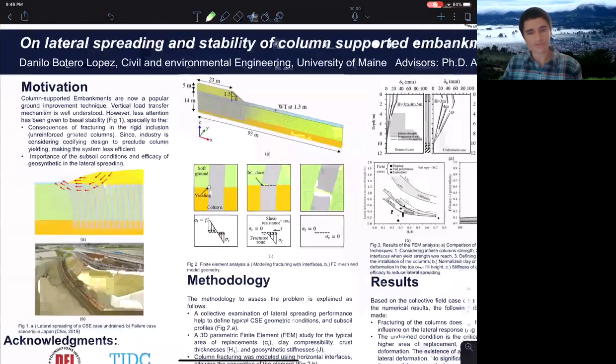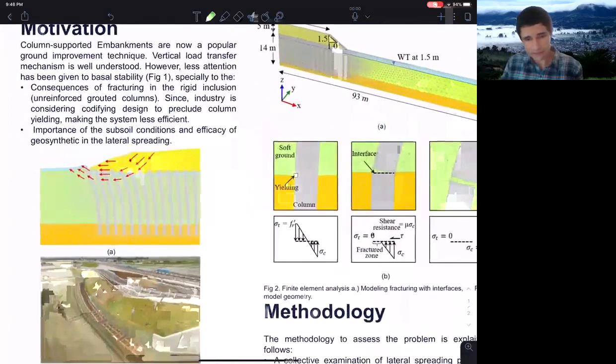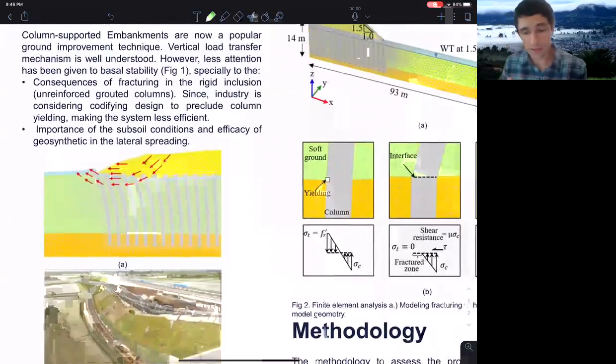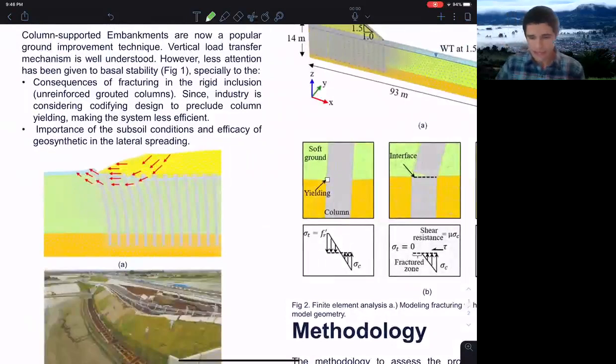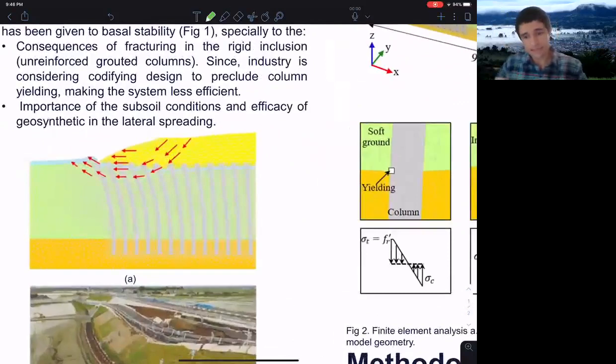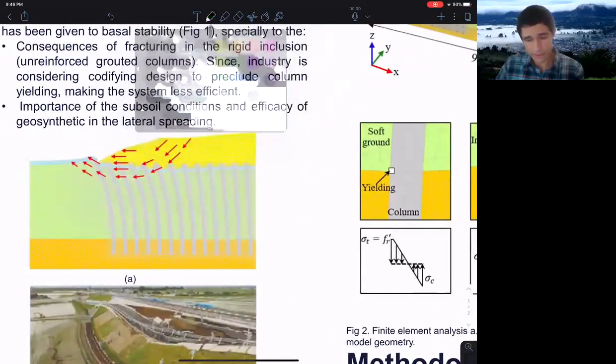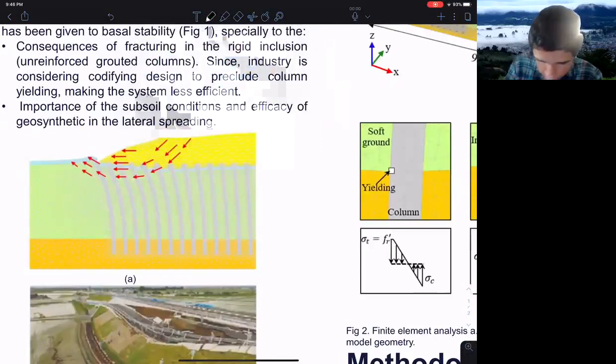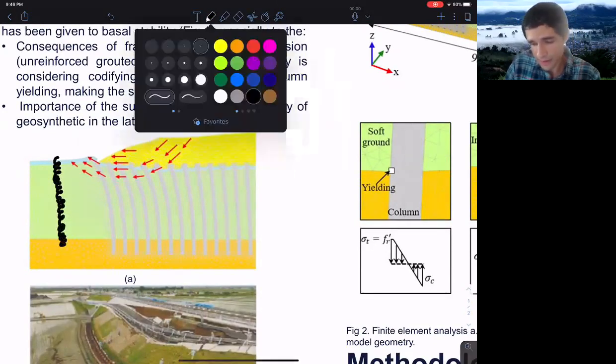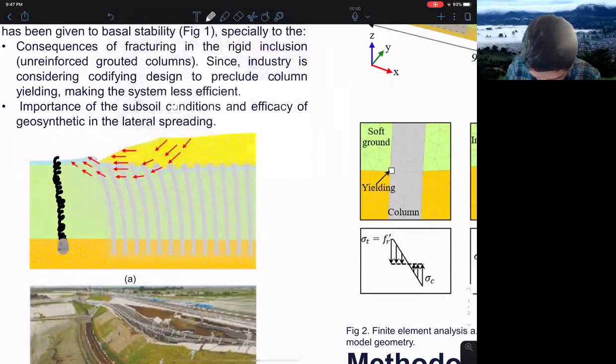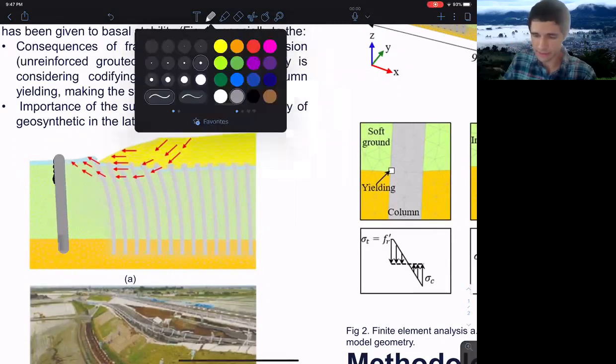First, I'm going to talk about the motivation of this study. These columns are now a popular ground improvement technique. The reason is that these columns are very fast to build. They have a drill machine and they drill until the desired depth, and then as they extract the machine, they grout the concrete. It's very easy and very fast.